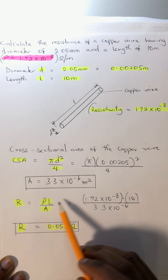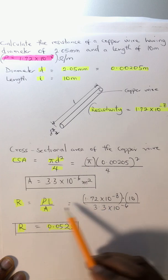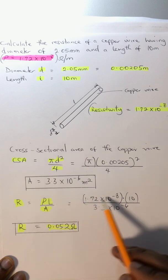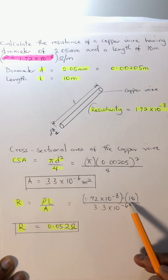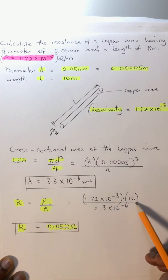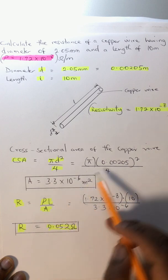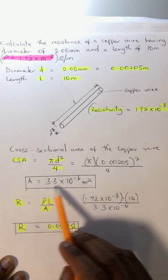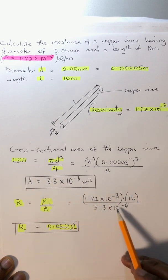The resistivity is 1.72 × 10^-8, times the length which is 10 meters, all over the area which is 3.3 × 10^-6.